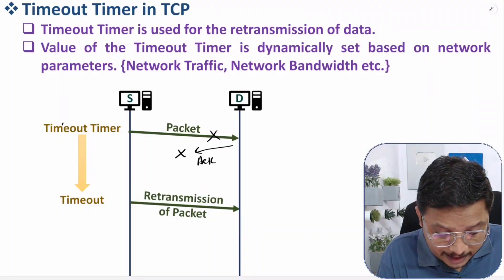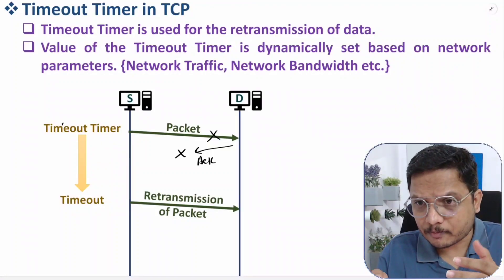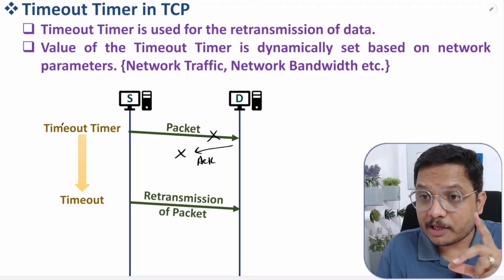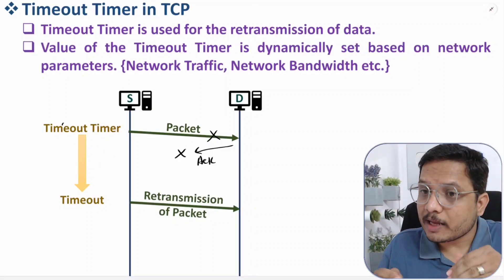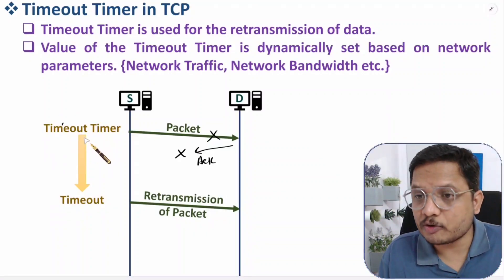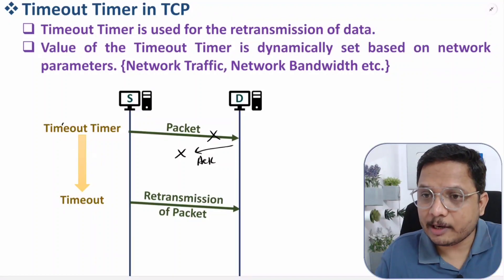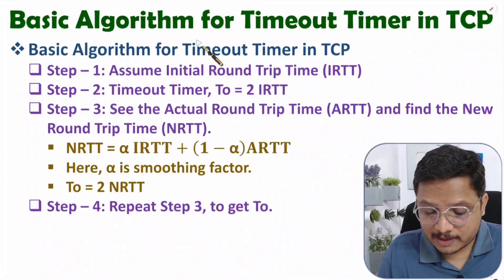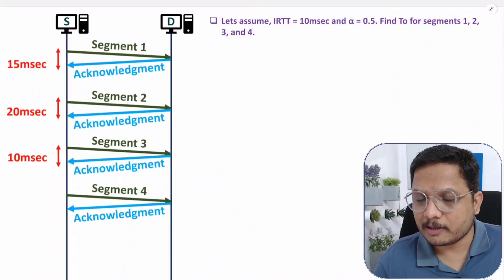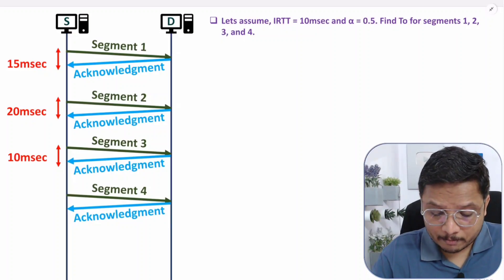The setting of this timeout timer should be dynamic. The reason is that network parameters change over time — during daytime, network traffic is high so the timeout timer value should be high, and during nighttime, network traffic is less so the timeout timer value should be low. This dynamic calculation is done using a basic algorithm in TCP.